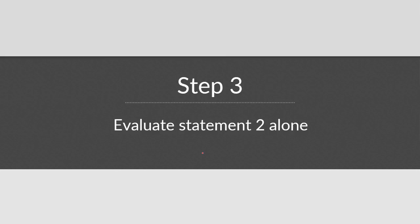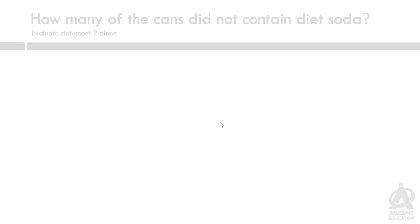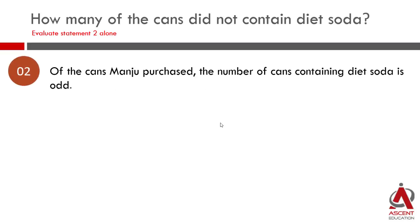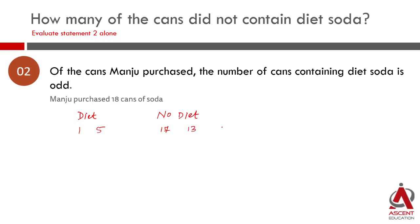Now we will move on to Statement 2 alone. Once you have evaluated Statement 1, even if it is sufficient, we need to evaluate Statement 2 alone to check whether it alone is sufficient. Statement 2: of the cans Manju purchased, the number of cans containing diet soda is odd. She bought 18 cans. What could the number of diet soda cans be? If diet soda cans is 1, then no-diet cans is 17. If diet soda cans is 5, that also works since it is odd. We are not getting a unique answer using Statement 2, so Statement 2 is not sufficient.